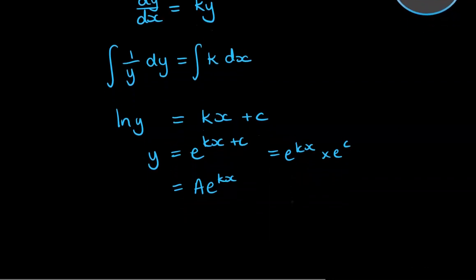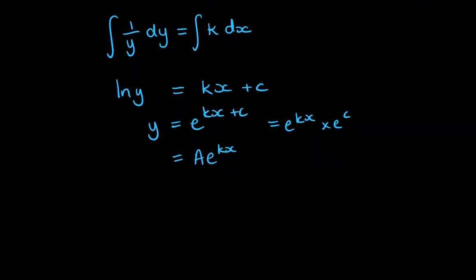Now in terms of growth and decay, we're normally talking about x as being a time variable, so that actually usually gets represented as a t. Now if you think about this final equation we've got here, y equals a e to the kx. If x was 0, then we would have y equals the constant a, so a becomes the value of y when x is 0, or the initial value of y. So we would call that y subscript 0.